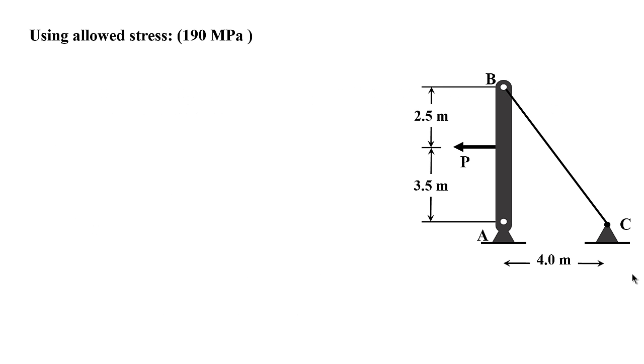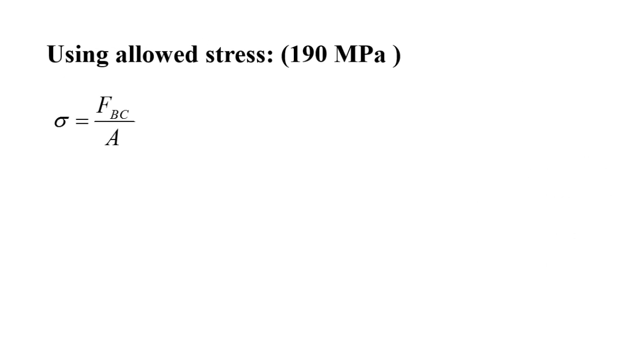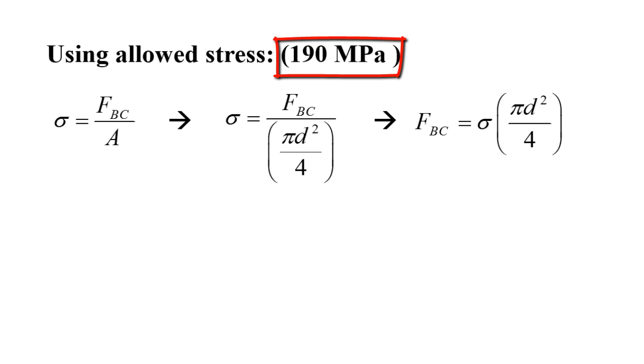The first one using the allowed stress, so let's look at this equation. We know that the stress equals the force over the cross-sectional area. And that will lead to the force over the cross-sectional area, since I have the diameter of the cable, so it's pi D squared over 4, that will give me the area of the cross-section of the cable. Now I want to solve for the force FBC, it's basically the stress times the area. I know the stress, which is the maximum stress allowed, which is 190 MPa.